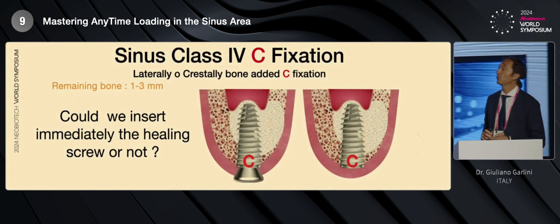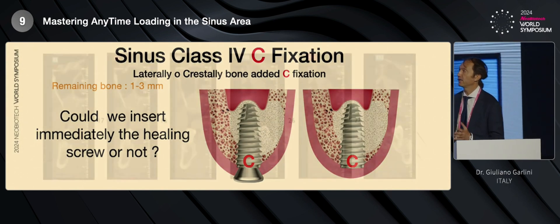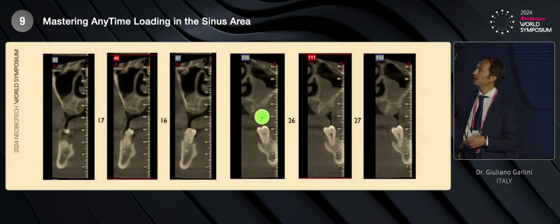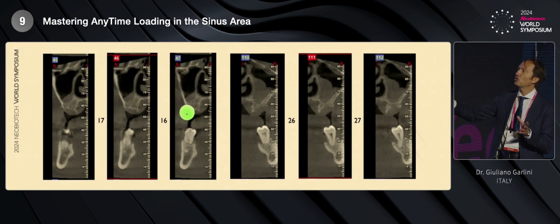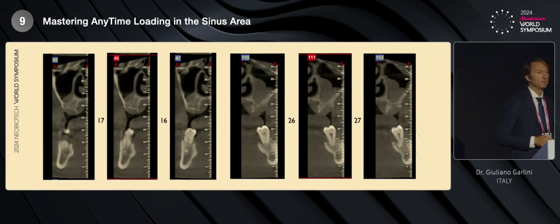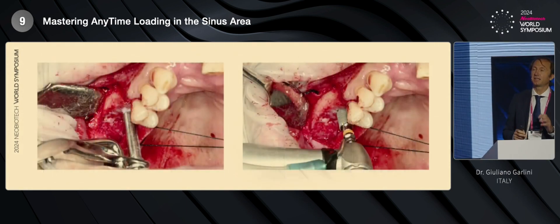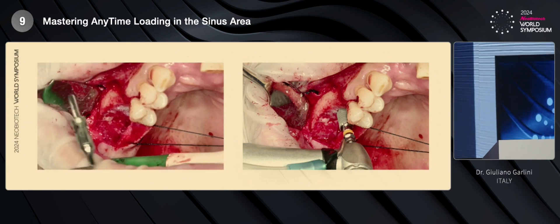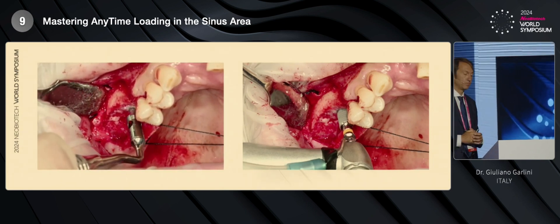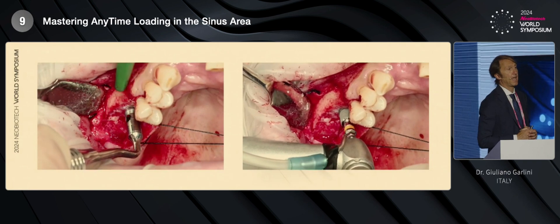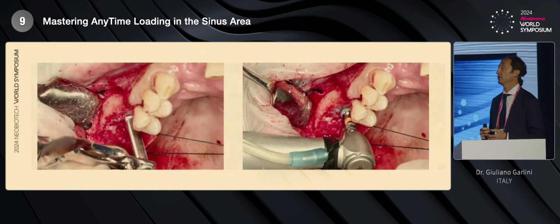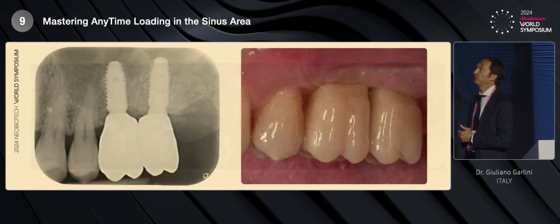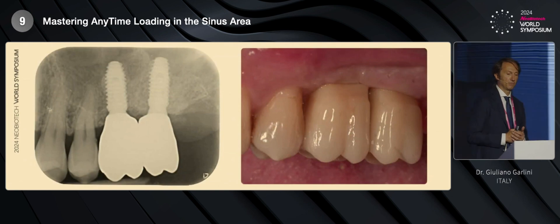Also for the healing screw, when you have a situation like this — with 2 mm on the left of the patient, and here you have more, 3 to 3.5 mm — I think it's better not to run any risk. It is better to do, in those cases, a delayed loading to prevent failure and insuccess for us and for the patient. So, we wait six months after the surgery and then we perform the final crown.